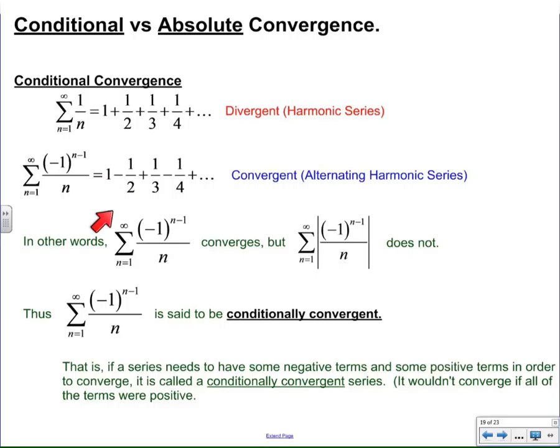So here's what we see. The alternating series converges, but the absolute value of this series does not, that means this alternating series is said to be conditionally convergent. A way to look at it is, if a series needs to have some negative terms and some positive terms in order to converge, then it's called conditionally convergent. That is to say, it won't converge if all of the terms were positive, but it will converge if some of the terms are negative and some of the terms are positive.